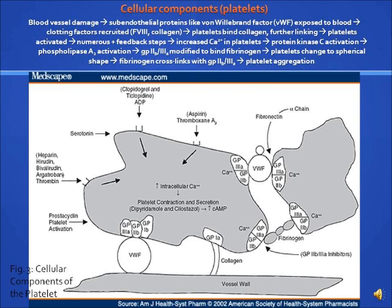The granule contents activate a GQ-linked protein receptor cascade, resulting in increased calcium concentration in the platelet cytosol. The calcium activates protein kinase C, which in turn activates phospholipase A2 (PLA2). PLA2 then modifies the integrin membrane glycoprotein 2B-3A receptor, increasing its affinity to bind fibrinogen. The fibrinogen cross-links with glycoprotein 2B-3A to aid in aggregation of platelets.